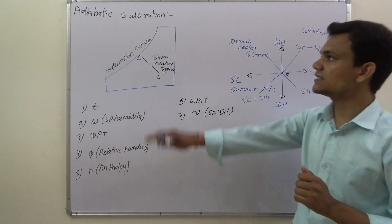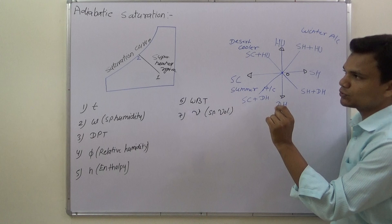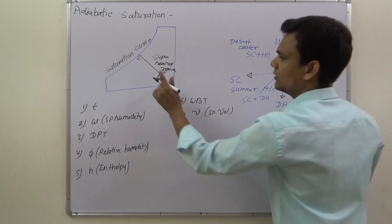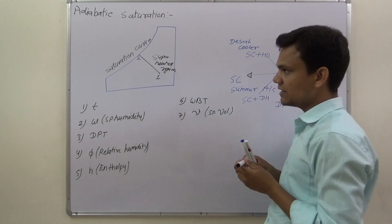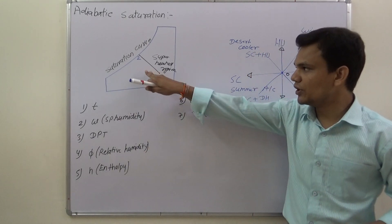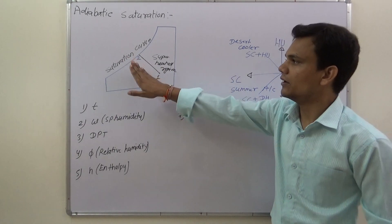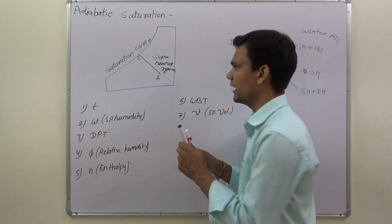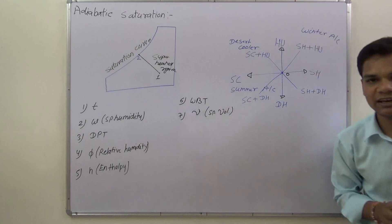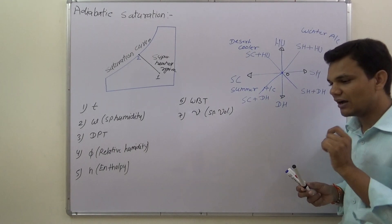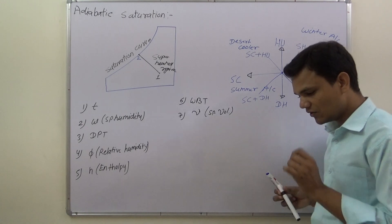The other name of the sensible cooling plus humidification process is adiabatic saturation. In adiabatic saturation, a point that is in the superheated region moves up to the saturation curve. When we reach the adiabatic saturation curve, the relative humidity of the air will be 100% — meaning the air will be fully saturated.